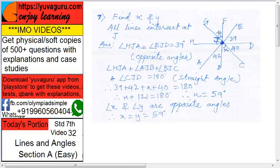Now all vertically opposite angles are equal. So X equals to Y equals to 59, both X and Y are 59 degrees.